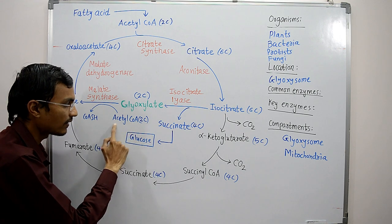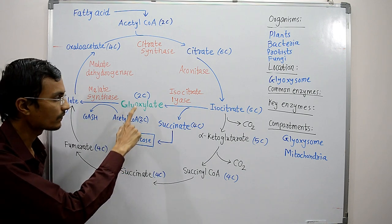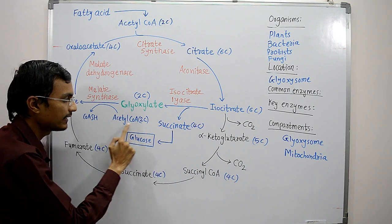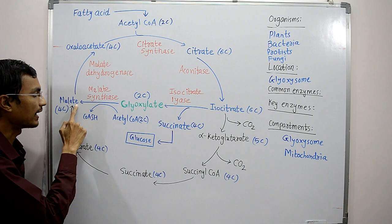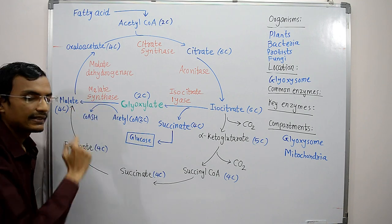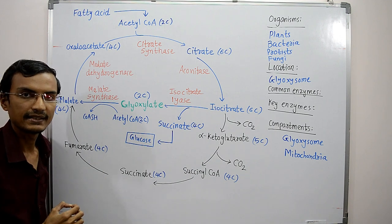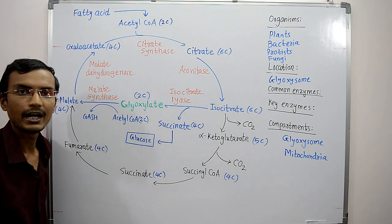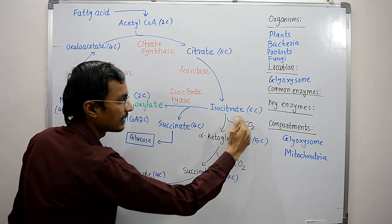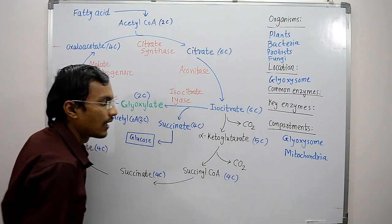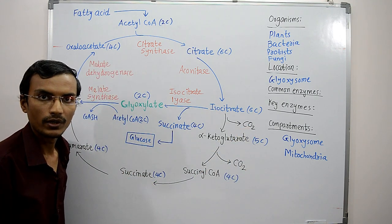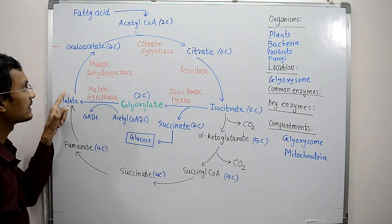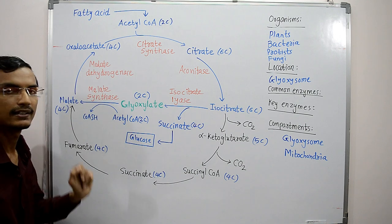Glyoxylate then combines with another molecule of acetyl-CoA — two carbons combining with two carbons — to produce malate. The enzyme working here is the second key enzyme of the glyoxylate cycle, malate synthase. These two steps bypass the oxidative decarboxylation reactions where carbon atoms would otherwise be lost as CO₂, so no carbon atoms are lost through this bypass mechanism.